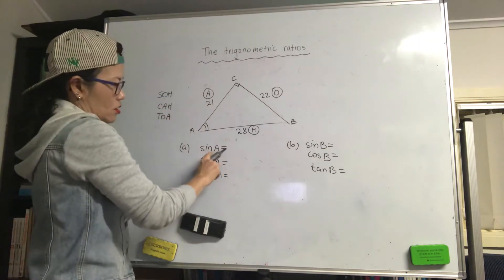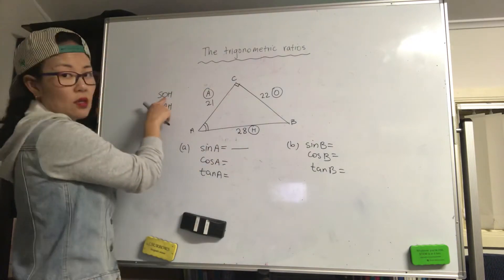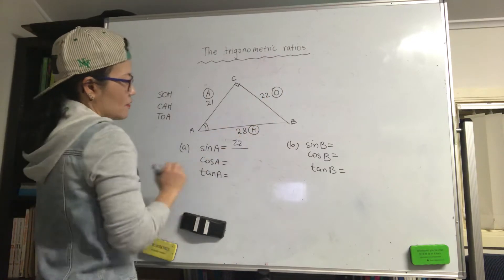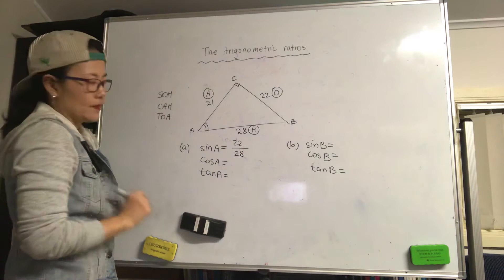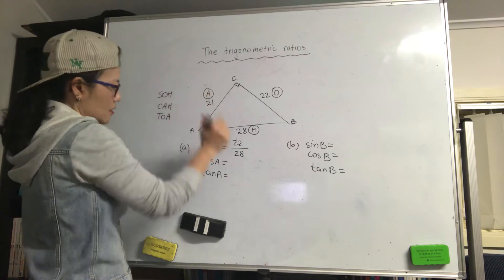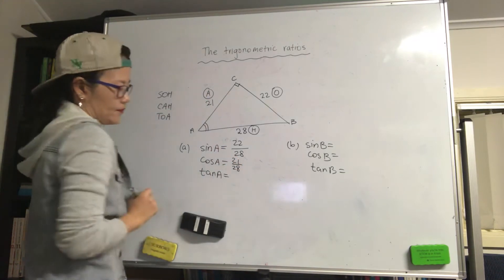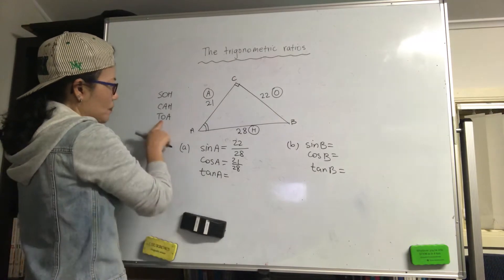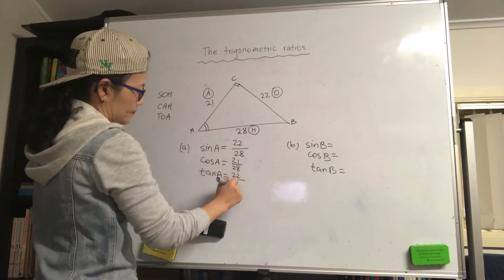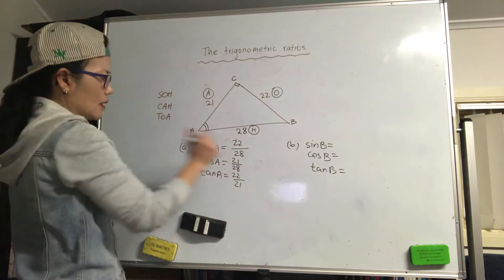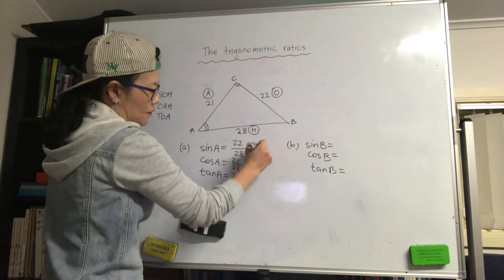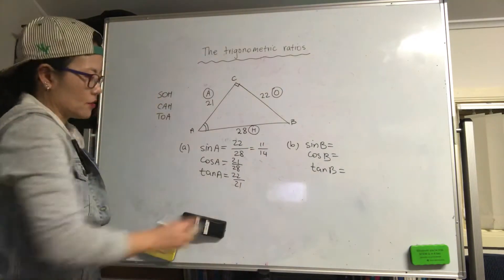So sine A is opposite over hypotenuse. Cos A is adjacent over hypotenuse. Tan A is opposite over adjacent. We can simplify that one if possible — leave it as it is, that's good.